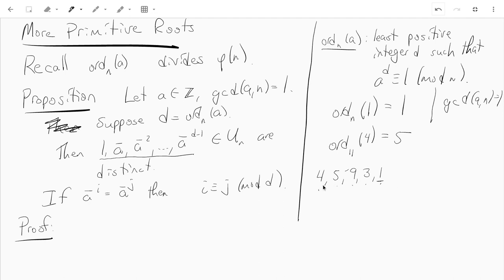And so we see the least positive integer d is the integer 5, because 4 to the 5th is congruent to 1 and 4 to any lower power is not 1. And recall that the order of a mod n has to be a divisor of phi of n. Remember phi of n, that's the number of elements of the units mod n.